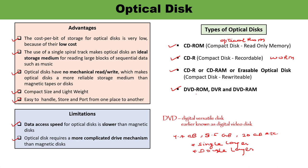DVD-ROM is a read-only memory type — only data can be read from it and users cannot write data. Its structure contains a polycarbonate plastic base as the foundation, then a very thin opaque layer of reflective material, followed by a transparent film with a protective layer over it. Pits and lands are formed on this structure. This is how a DVD-ROM is constructed.